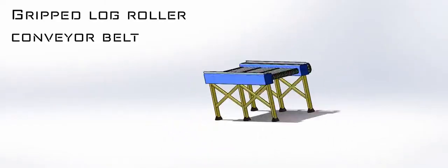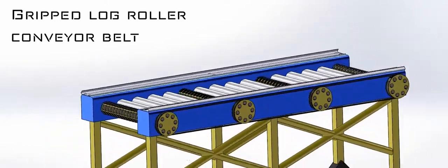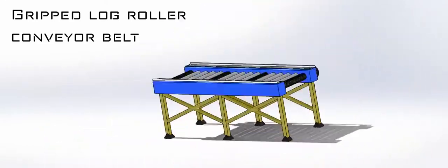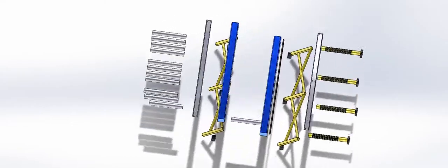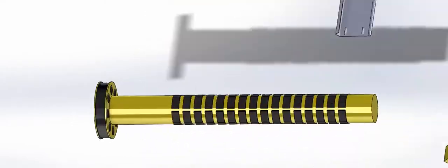This gripped log roller conveyor belt features textured rollers to help move logs along more smoothly, along with metal guardrails along the sides to stop logs from falling over.